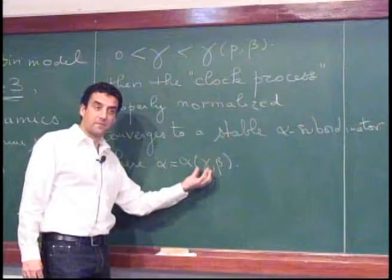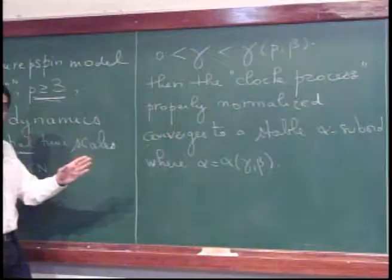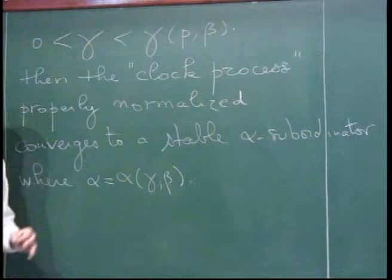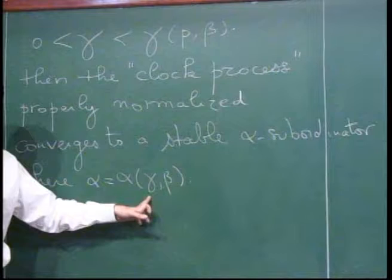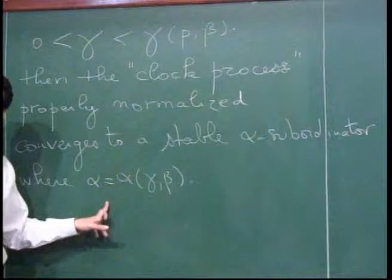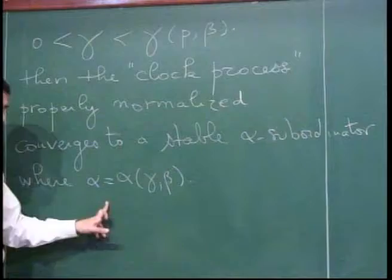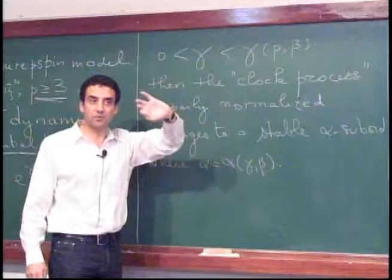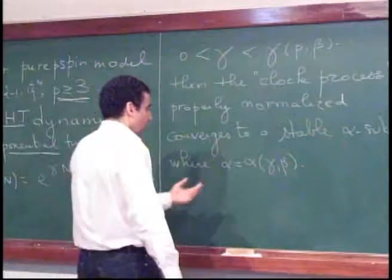The longer the timescale, the larger γ, and this α becomes larger, approaching one. When γ reaches a threshold, α becomes one, which is where the picture of the subordinator breaks down. When γ goes to zero, α goes to zero. There are many issues in this statement. First, what is the clock process and how do you normalize it? Then, what does convergence mean? It means convergence in the topology of Cadlag processes in the space D for the M1 topology.